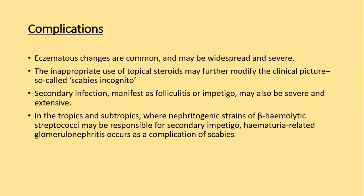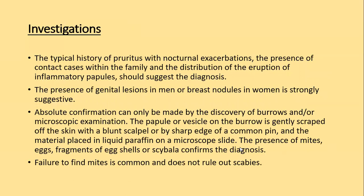Secondary infection like folliculitis or impetigo may occur, and in tropical or subtropical regions, if infection is due to beta-hemolytic streptococci, patients are at risk of developing hematuria-related glomerulonephritis as a complication. Investigation: the typical history of pruritus with nocturnal exacerbation and presence of contact cases within the family, along with distribution of eruption of inflammatory papules, should suggest the diagnosis and no investigation is usually required. The presence of genital lesions in men and breast lesions in women is strongly suggestive. Absolute confirmation is done by discovery of a burrow or microscopic examination.